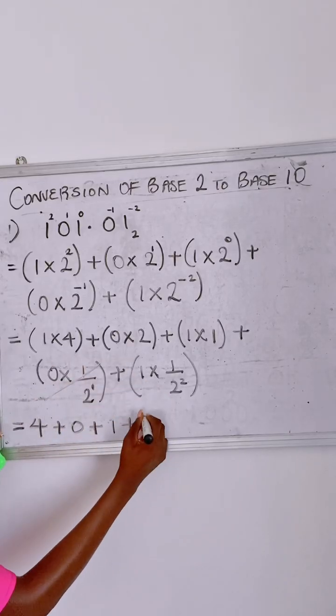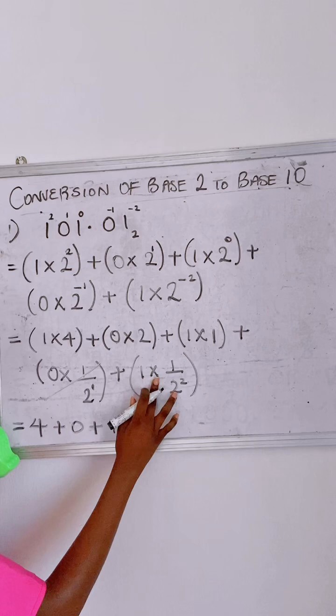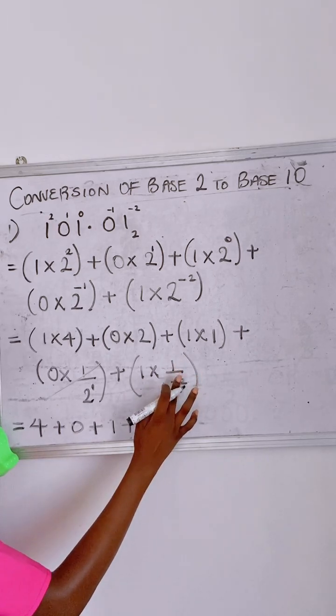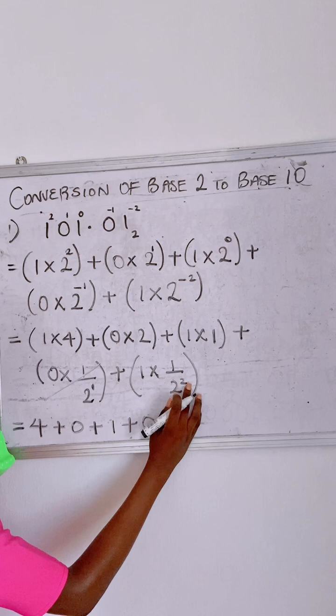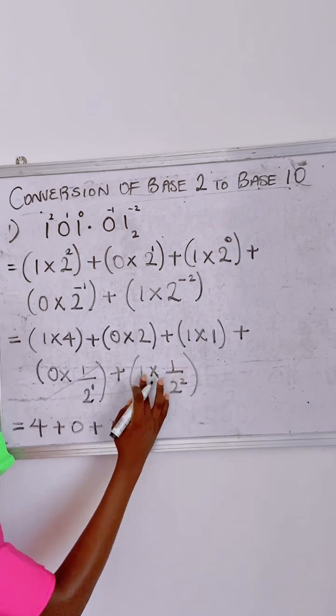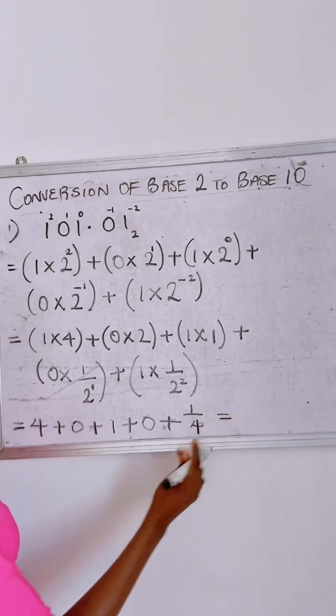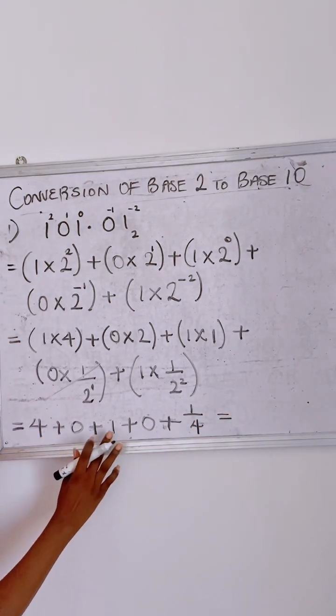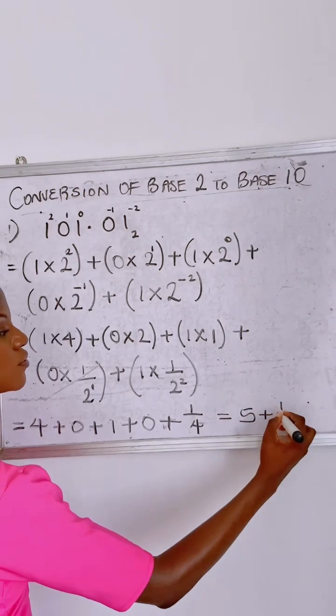The whole of this is gone, it's zero. Okay, then one times one over two. Let's do this first: two raised to the power of two is four, so you have one over four, right? So one over four times one is one over four. So four plus zero plus one is five, plus one divided by four.